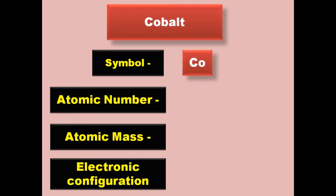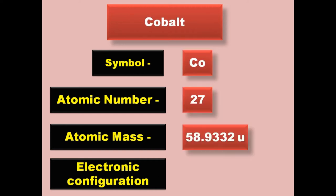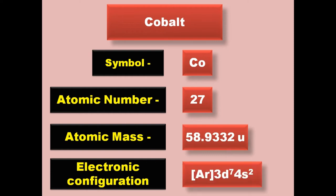Cobalt has symbol Co, atomic number 27, atomic mass 58.9332, electronic configuration [Ar] 3d7 4s2. Cobalt is a transition metal and exists in solid form at room temperature.